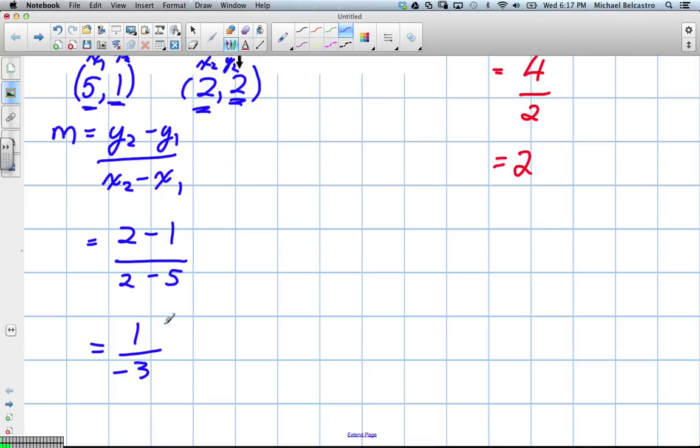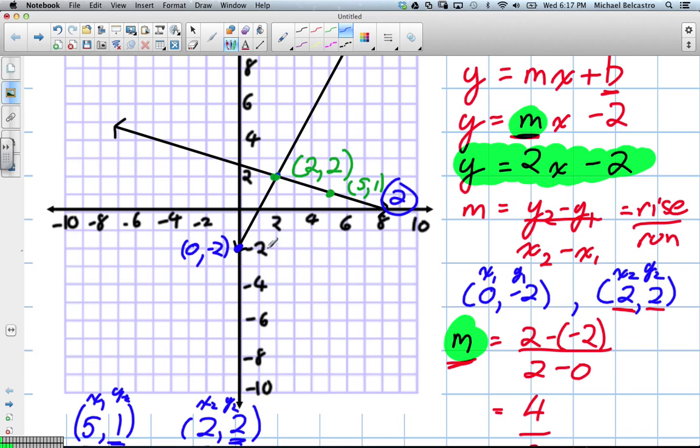Remember our line equation is y equals mx plus b. Well, we know m. m is negative 1 third. We can replace m. We still have x plus b. We've got to find b. And we said b was really hard to find. So instead of just pointing like we did at the last one, this one we can't tell. We're going to just take another coordinate along the line. Here's a point right here, negative 1 and 3.